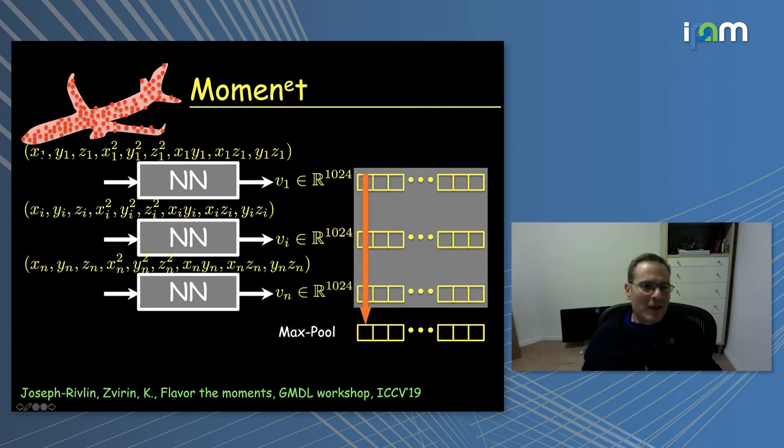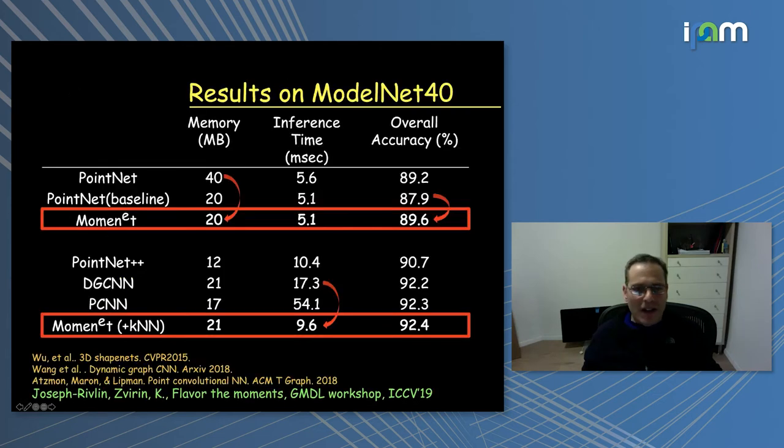What we did is we helped the network a little bit by designing the features so they would be easier for the moments idea concept to work with. Instead of just feeding the network three numbers x, y, and z, we now feed the networks with nine numbers: x, y, z, as well as x squared, y squared, etc. We follow the same machinery as before, train the network, and surprise, surprise, we get a smaller network. The number of parameters is about half as before, and the accuracy goes up. We gain both in complexity and time, as well as accuracy, which is an interesting way of looking at PointNet.